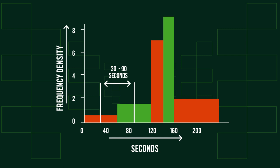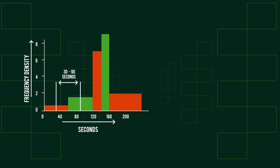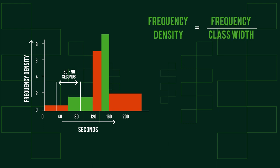Firstly, we need to rearrange our histogram equation to find frequency. Because frequency density is equal to the frequency divided by the class width, to find frequency alone, we have to multiply the class width by the frequency density.